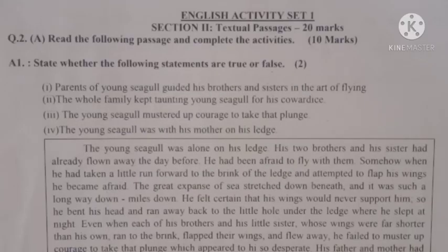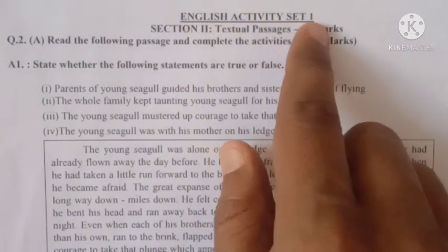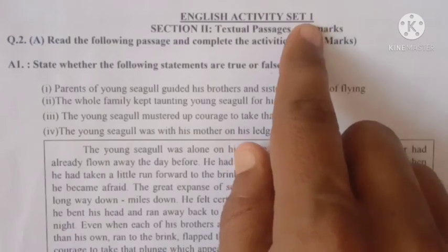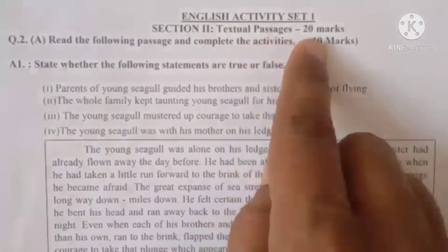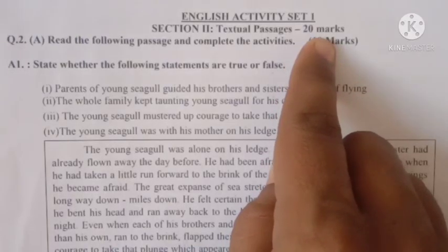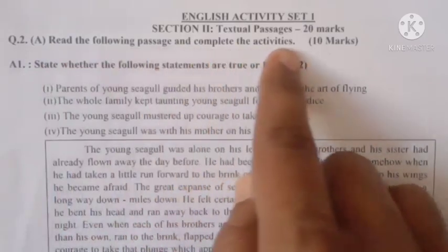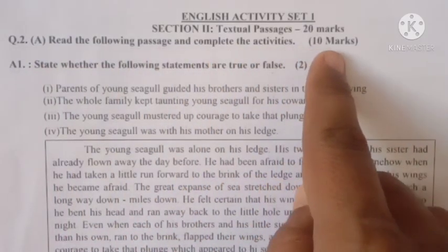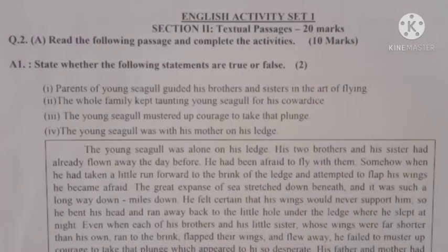Vidyarthi Mitran, here is English activity set 1, this is the first set, section 2nd, textual passages, 20 marks. Here is question number 2 — read the following passage and complete the activities. First passage is 10 marks. In this video we will start with the activities and find the answers.